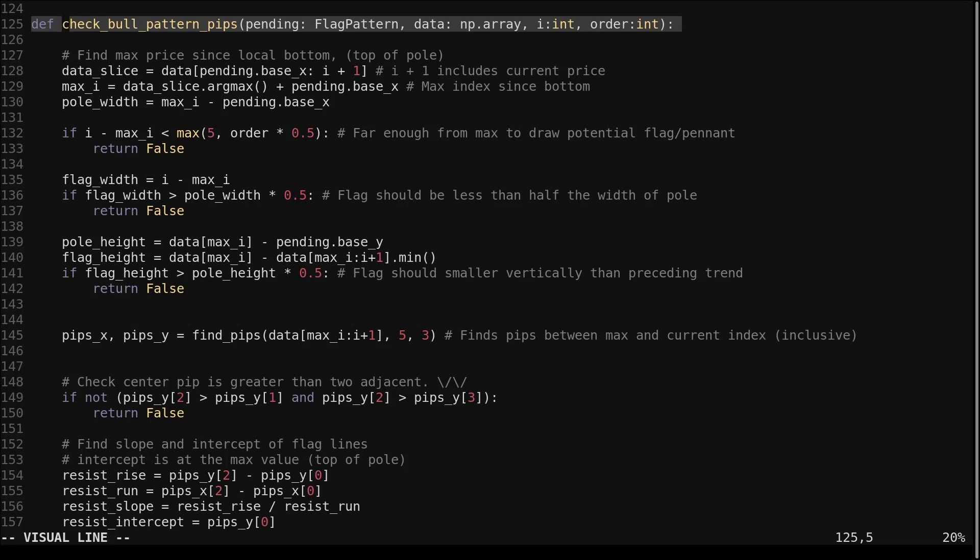Let's go over the check bull pattern pips function. This is where the rules about what qualifies as a pattern are enforced. It takes the pending pattern, the closing price array, the current index, and the order parameter. We get the data from the base of the pole up to and including the current price. We find the max price since the bottom, this is our pole tip. We check that there has been at least 5 or half the order parameter candles since the tip. We ensure the flag width is less than 50% of the pole width. Then we ensure the flag height is less than 50% of the height of the pole. These 50% figures could be tweaked to adjust the patterns selected. I chose them to be quite lenient. They should remain less than 100% though.